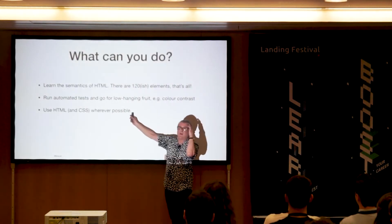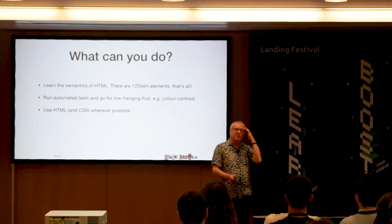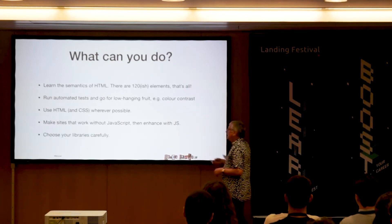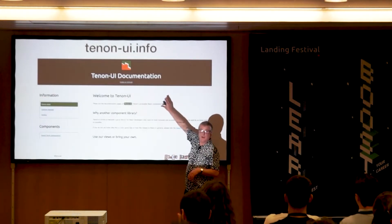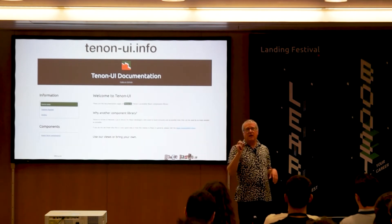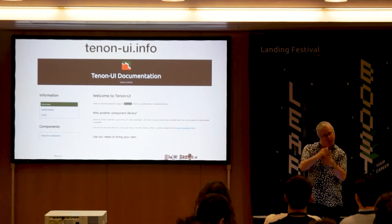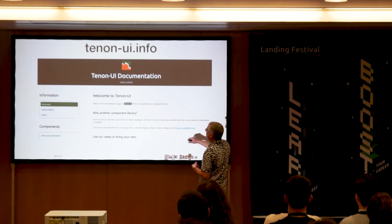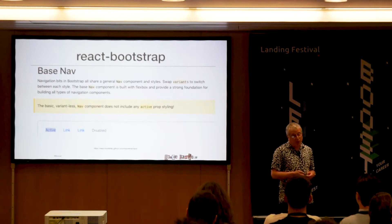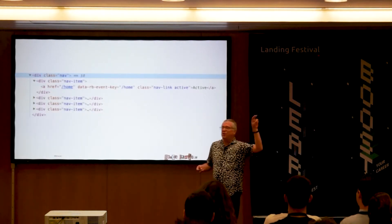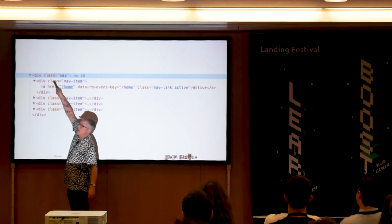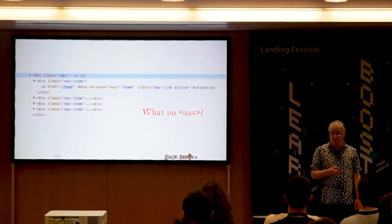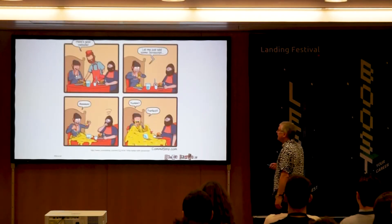You can also use HTML and CSS wherever possible — don't use JavaScript if you can do it in HTML and CSS. Make sites that work without JavaScript and then enhance with JavaScript. Choose your libraries carefully. If you're using React, 'ten-on' has a library of components — they've tested each one with people with disabilities, each one is guaranteed to be accessible, and it's free and open source. Or you could use React Bootstrap, but their navigation component uses 'div class equals nav' — they could have had 'nav class equals nav' but chose not to, so I would not use this.